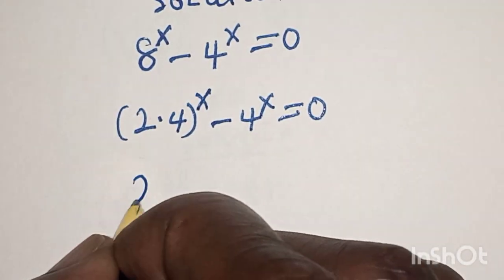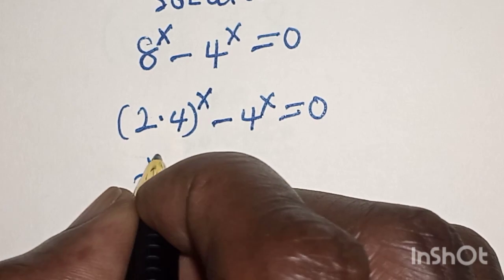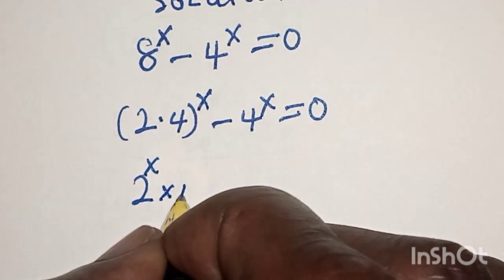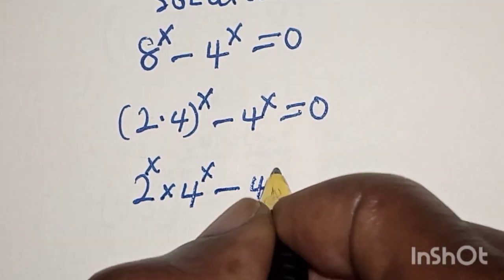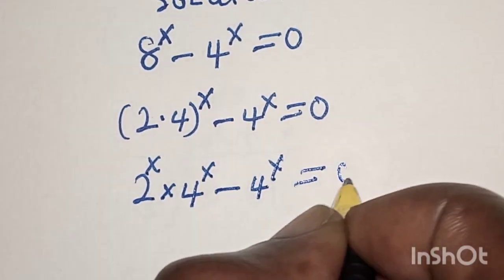So this is 2 raised to power x multiplied by 4 raised to power x minus 4 raised to power x is equal to 0.